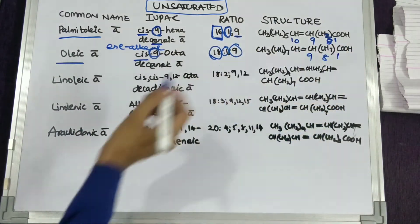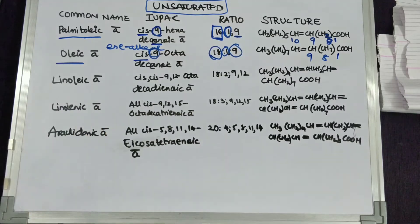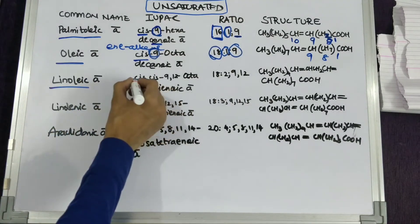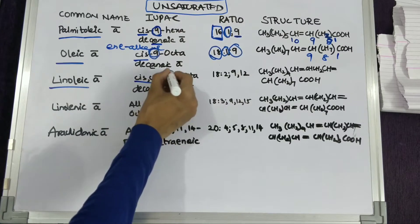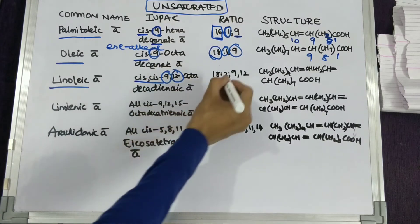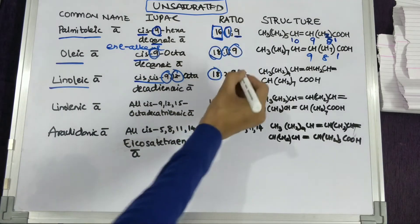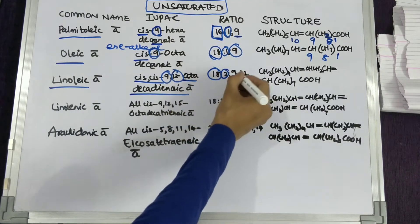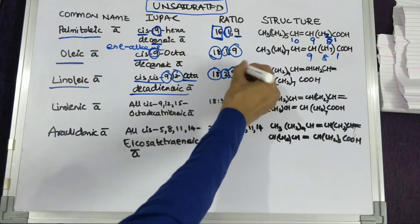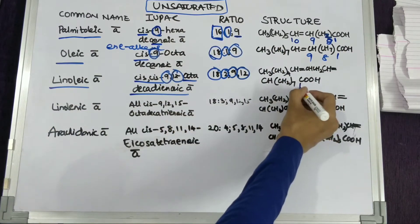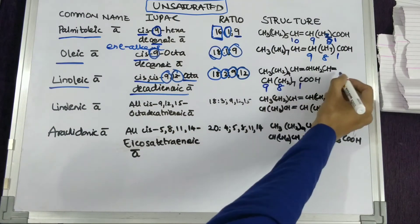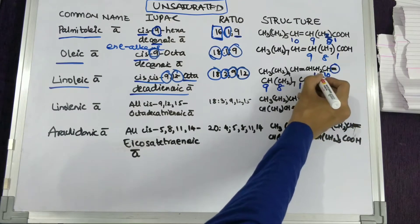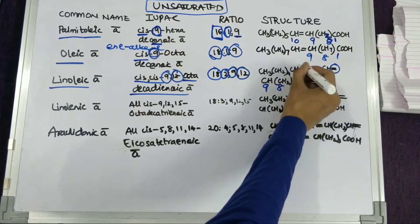Counting: 1, 8, and 9 — confirming the double bond position. The IUPAC name for linoleic acid is cis-9,12-octadecadienoic acid — an 18-carbon structure with two double bonds on the ninth and twelfth carbons. Checking: 1, 8, and 9 — double bond on the ninth; then 10, 11, and 12 — double bond between the 12th and 13th carbon.